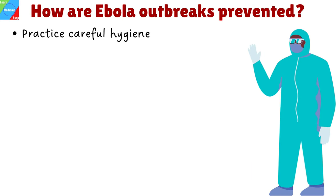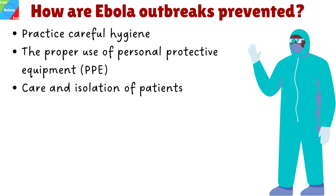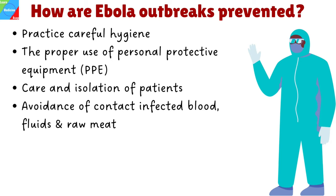How are outbreaks prevented and controlled? Practice careful hygiene — wash your hands with soap and water or an alcohol-based hand sanitizer. Avoid contact with blood and body fluids. During outbreaks, healthcare workers and people caring for sick relatives are at high risk for developing Ebola because they are more likely to come into direct contact with body fluids. The proper use of personal protective equipment greatly reduces this risk. Care and isolation of patients is important to prevent further spread and save lives. Avoid contact with bats and non-human primates, or their blood, fluids, and raw meat.